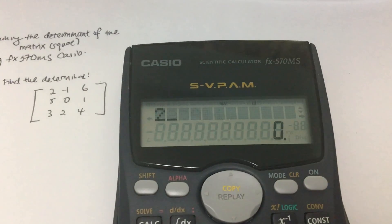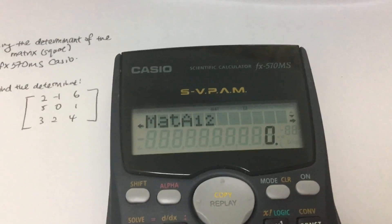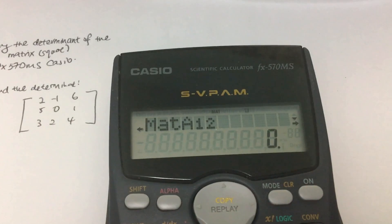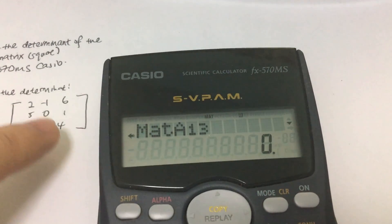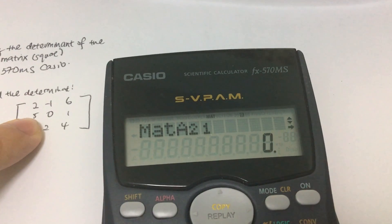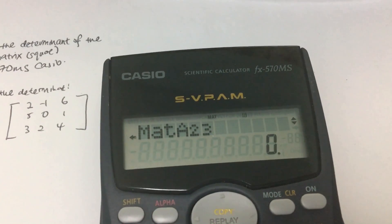Followed by the row one, column two, which is negative one. So I just press negative one, this negative one. And then row one, column three is six. Row two, column one is five. Row two, column two is zero, and so on and so forth.